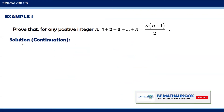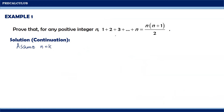On the next step, we need to assume that n is equal to k. Since n is equal to k, then our given mathematical statement will become 1 plus 2 plus 3 plus and so on and so forth plus k is equal to k times k plus 1 all over 2. Notice that we have substituted k in the variable n.